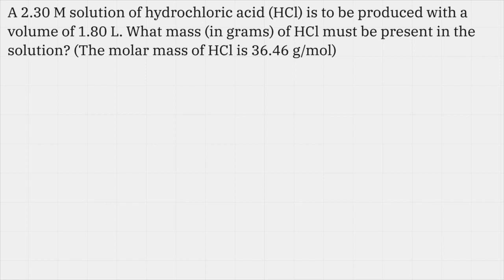The next problem reads as follows: A 2.30 M (that's pronounced molar) solution of hydrochloric acid (HCl) is to be produced with a volume of 1.80 liters. What mass in grams of HCl must be present in the solution? We're given the molar mass of HCl as 36.46 grams per mole. If that wasn't given, you would need to go to the periodic table to add up the molar masses of hydrogen and chlorine. When we see the symbol capital M, that means molar or molarity. This solution needs to have a concentration of 2.30 moles of HCl per 1 liter of solution. But we have 1.80 liters of solution, so we'll need to use that molarity ratio to figure out how many moles of HCl would be in this particular solution.